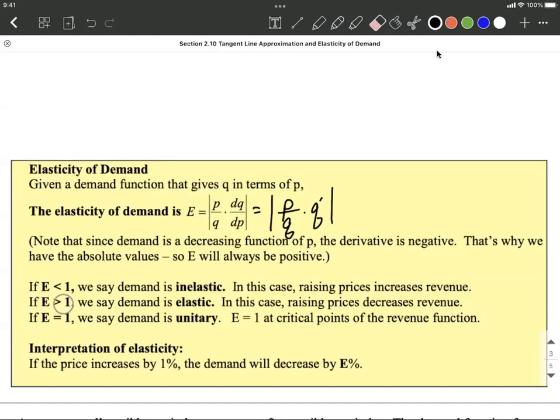If that's a number greater than one, like three or something like that, we call that elastic. If we raise our prices, we're going to decrease our revenue. So if we want to make the most revenue possible, we should probably decrease our prices.